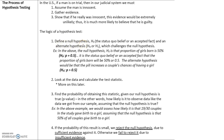We first define a null hypothesis. A null hypothesis, given by the notation H sub zero, is the status quo belief or an accepted fact. For example, the status quo belief here is that the man is innocent — that is the null hypothesis, the accepted fact unless proven otherwise. We also define an alternative hypothesis, which challenges the null hypothesis. In the example with the pill, the null hypothesis — the accepted fact — is that the proportion of girls born is 50%, so H₀: p = 0.5.